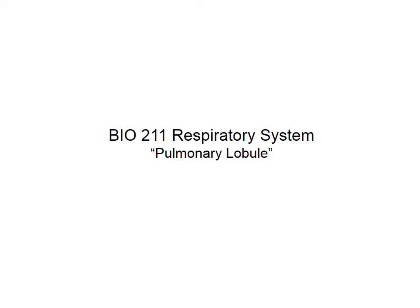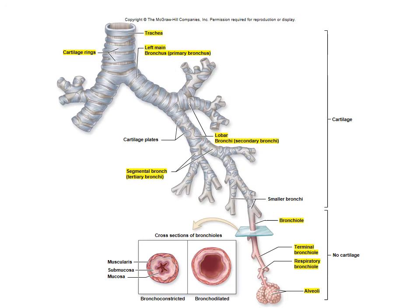This is the Bio 211 lab for the respiratory system. In this video we're going to talk about the pulmonary lobule. Please look for the figure in your textbook that shows your bronchial branches going all the way down to your alveoli. We already talked about the bronchus first. Air passes through the trachea, then travels through the primary bronchus, secondary bronchus, and down into the tertiary bronchus. Following the tertiary bronchi down, we have smaller branches called smaller bronchi, but you don't really need to know them for this class.